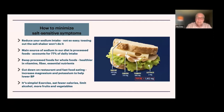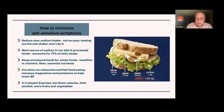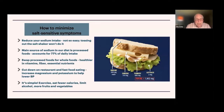It's very hard to minimize your salt intake unless you really begin to pay attention to where the salt is in your diet — it's not mainly from the salt shaker, it's in all the processed foods. If you're eating at a restaurant, you've lost control of your salt intake. You can be virtually certain you're getting more salt than you possibly could need. So cut down on restaurant and fast food eating. Increase magnesium and potassium to lower blood pressure by eating vegetables. Exercise, eat fewer calories, limit alcohol, eat more fruits and vegetables.